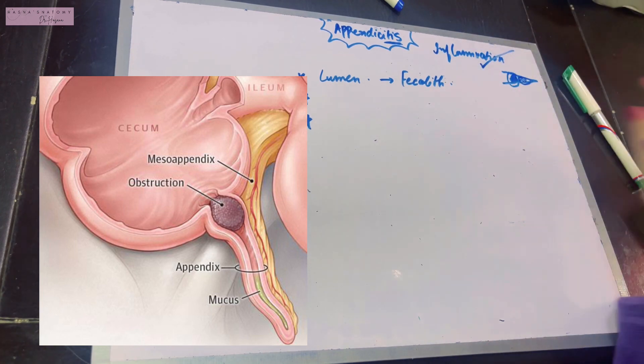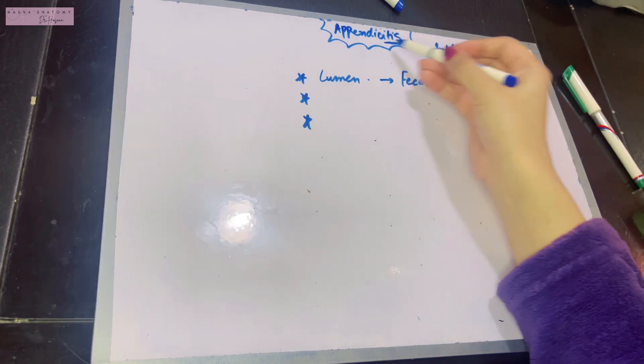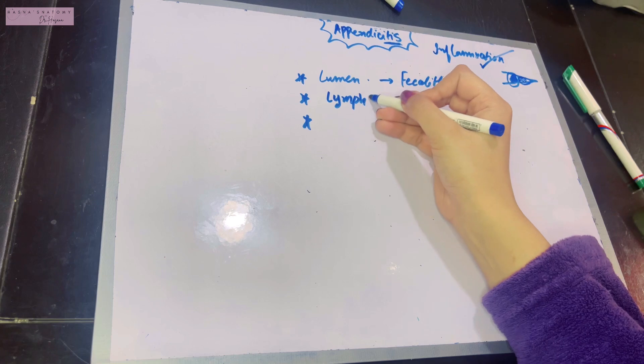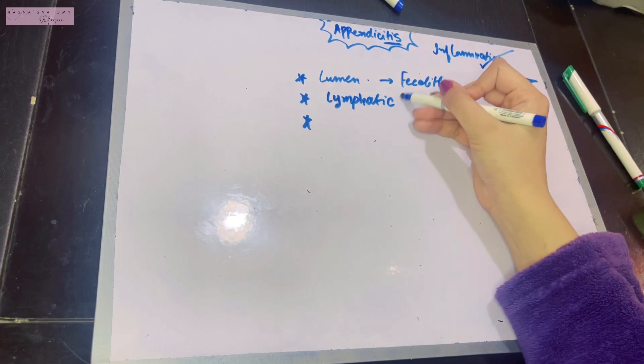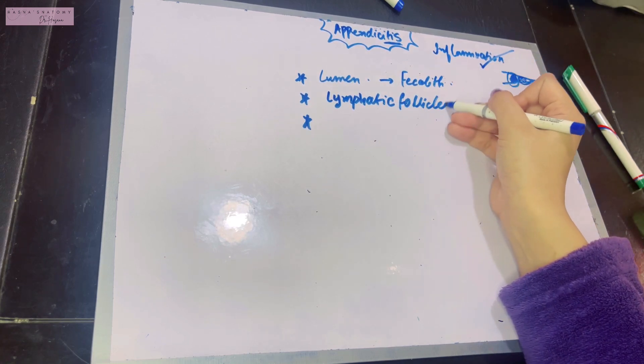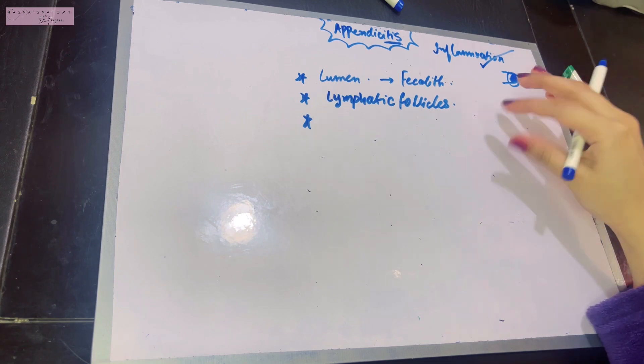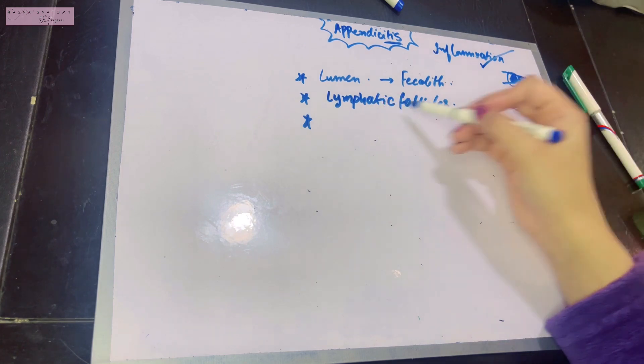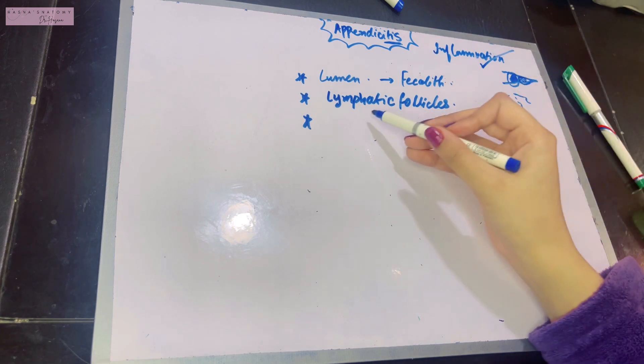The second part is that the appendix consists of so many lymphatic follicles. Basically, if you view the appendix histologically, it has many aggregates of lymphatic follicles.